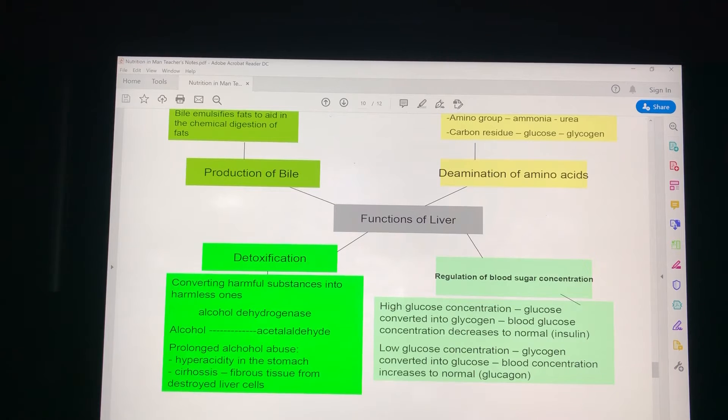Now the liver is also very important in detoxification. For example, alcohol. It has an enzyme to convert alcohol into acetaldehyde, and this makes the alcohol you consume less harmful to our bodies. But prolonged alcohol abuse will lead to these two things that are on the screen. So these are the functions of the liver.